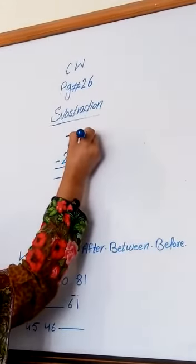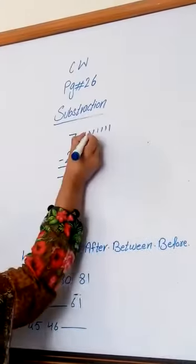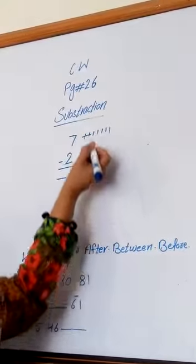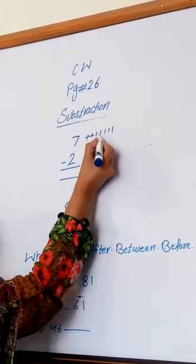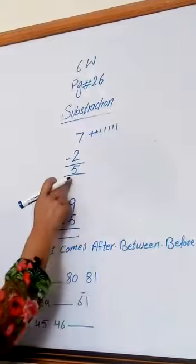Draw 7 lines: 1, 2, 3, 4, 5, 6, 7. Now cut 2 lines. How many lines are left? 1, 2, 3, 4, 5. Seven minus 2 equals 5.